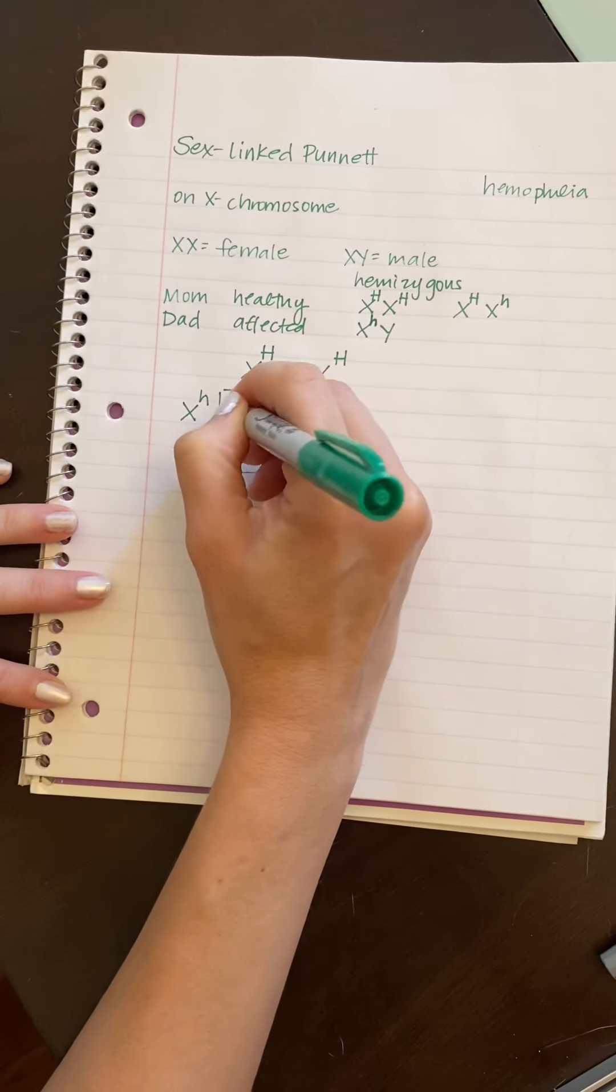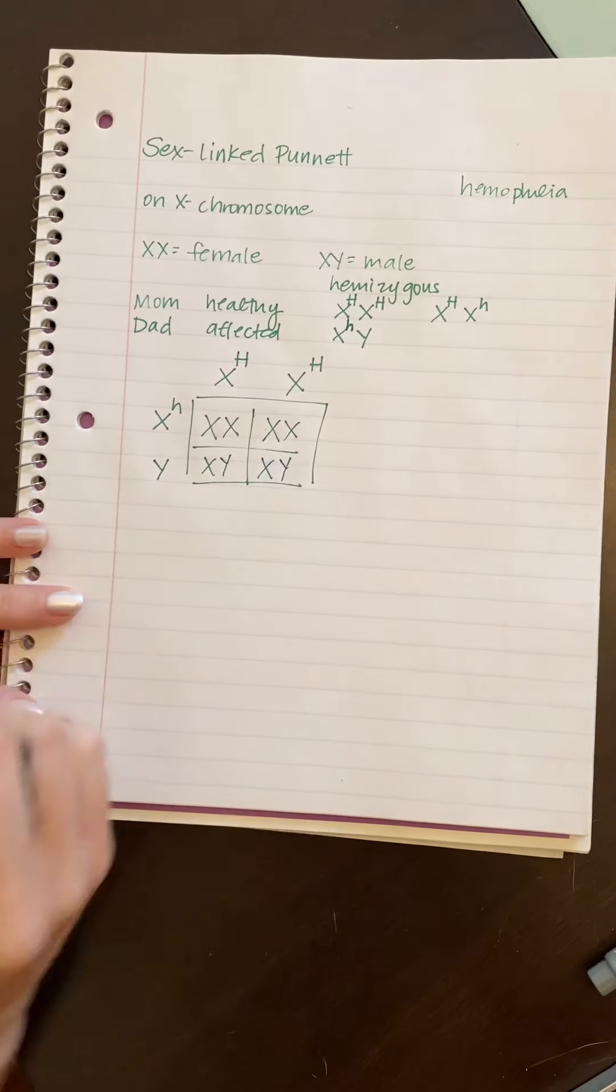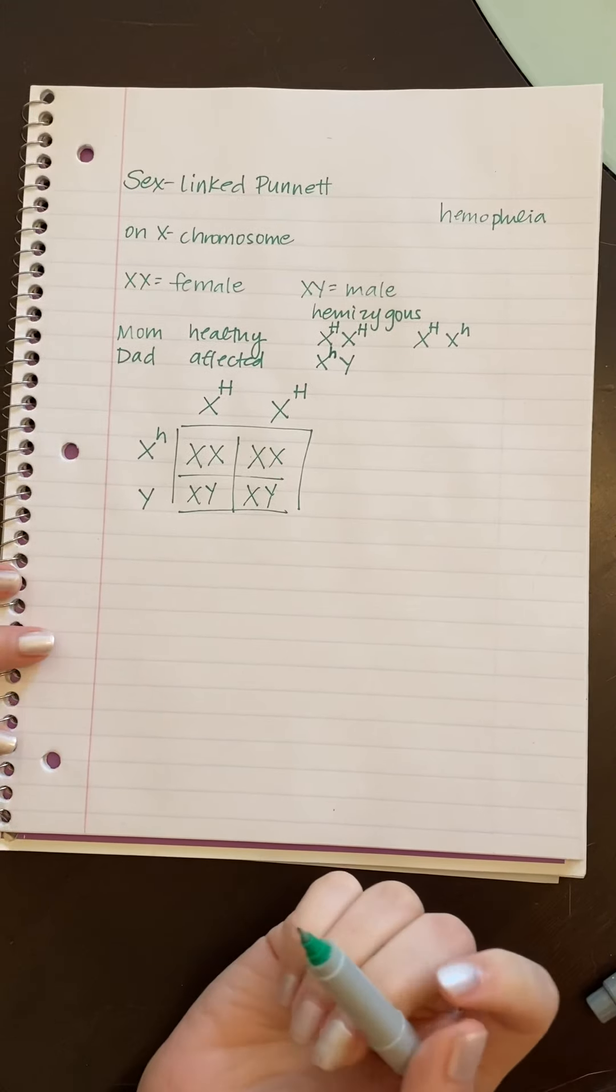That X is affected. So it's a lowercase. We do our square. What we see is again, they have a 50-50 chance of having a daughter or a son. That's anytime you are pregnant.